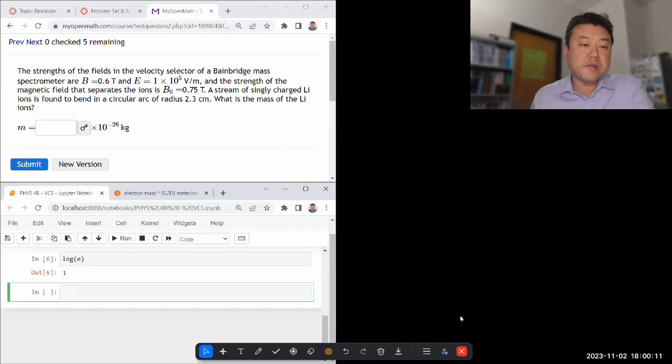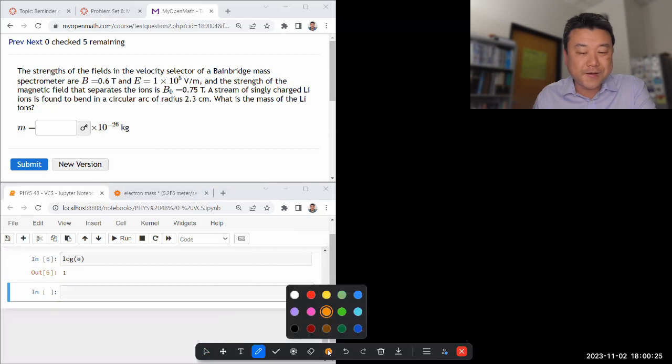So it's talking about the strengths of the fields in the velocity selector of a Bainbridge mass spectrometer. I have no idea what Bainbridge refers to. It might be a type of mass spectrometer, might be a brand of mass spectrometer. I guess the good news is it doesn't matter. So it's the same velocity selector.